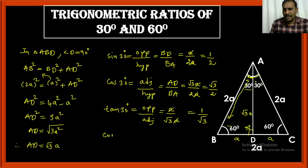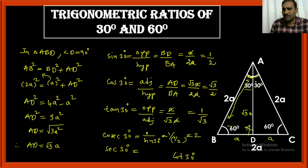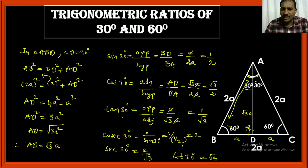Once you know the sin, cos, and tan values, you can find cosecant, secant, and cot by taking reciprocals. Cosecant 30 = 1/sin 30 = 1/(1/2) = 2. Secant 30 = 1/cos 30 = 2/√3. Cot 30 = 1/tan 30 = 1/(1/√3) = √3.